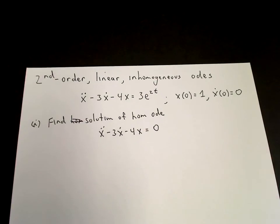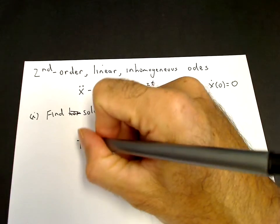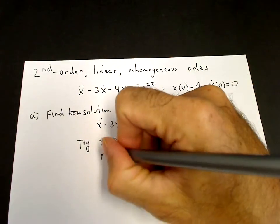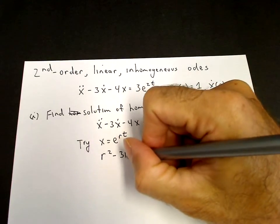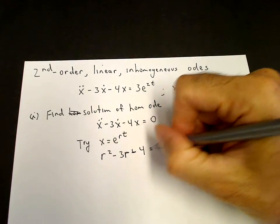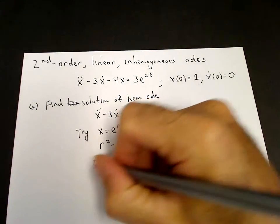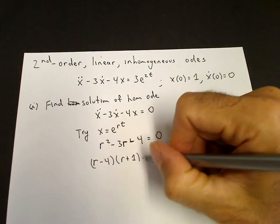We find the general solution of that differential equation. We do our usual ansatz, x equals e to the rt. We get the characteristic equation: r squared minus 3r minus 4 equals 0, which is factorable. 4 factors as 4 times 1, so it becomes r minus 4 times r plus 1 equals 0.